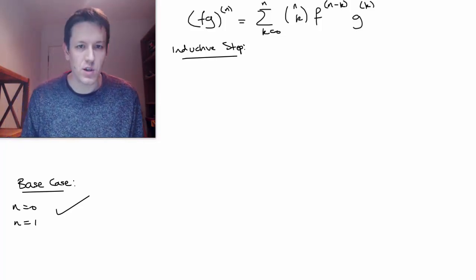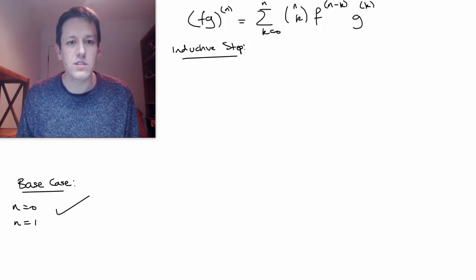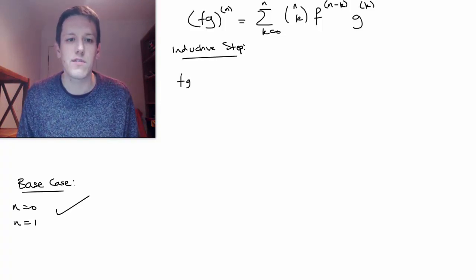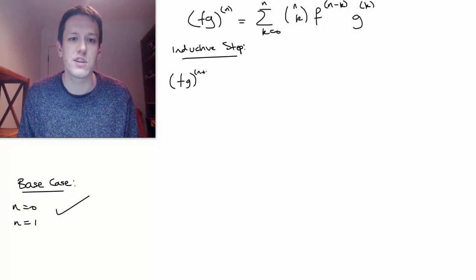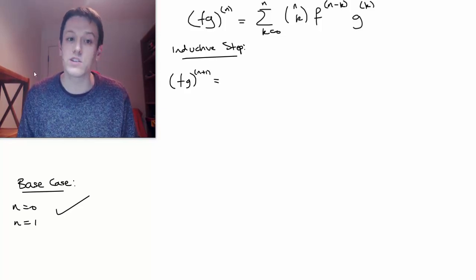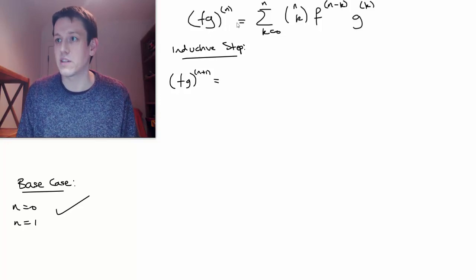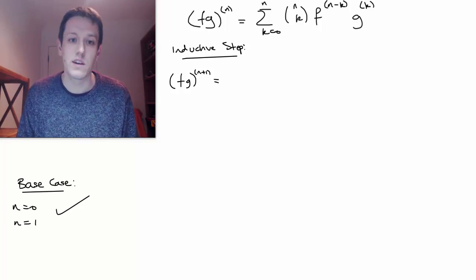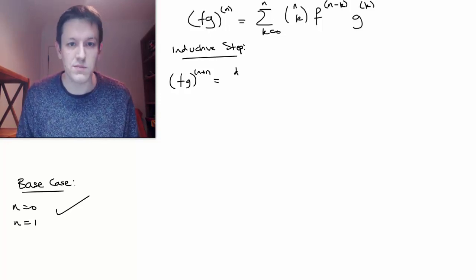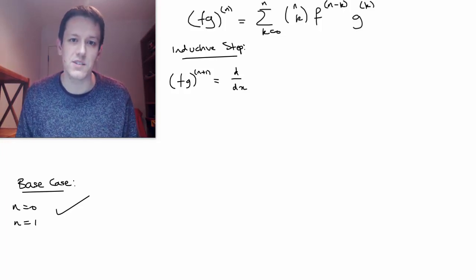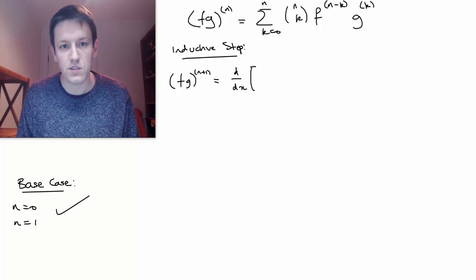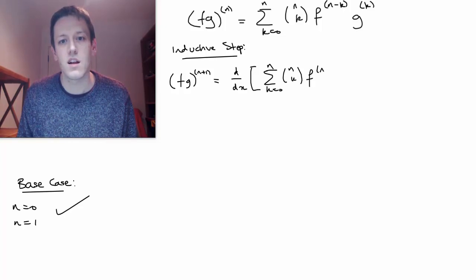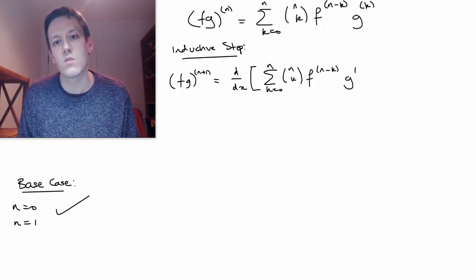Okay, so I'm going to assume that it's true for n and I'm going to prove that it's true for n plus 1. So what would (fg) differentiated n plus 1 times be then? Well, assuming the inductive hypothesis that this is the nth derivative, I just need to differentiate this once more. So let's say x was the variable here, so I'm going to differentiate this whole product once more.